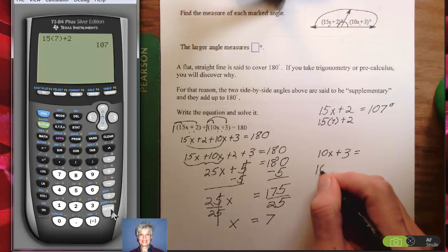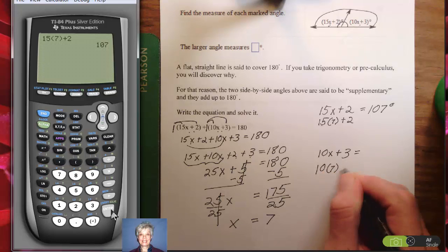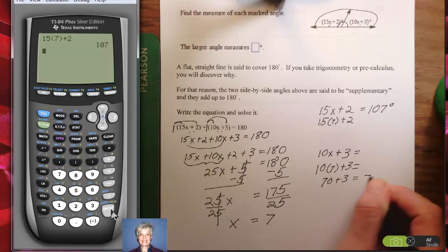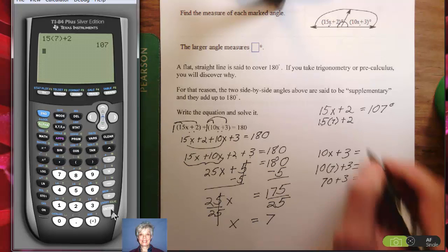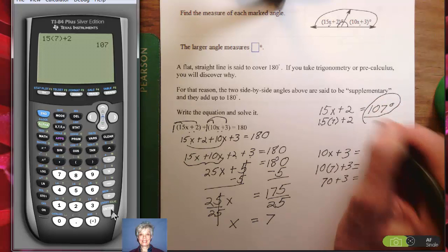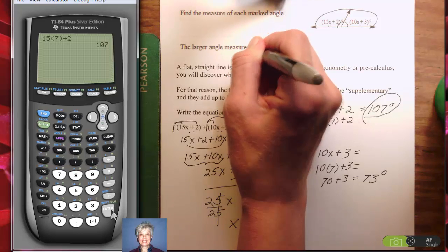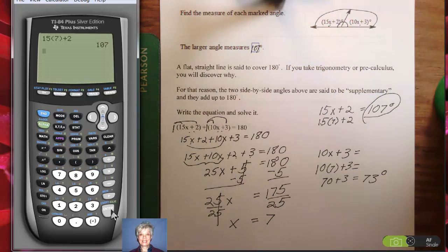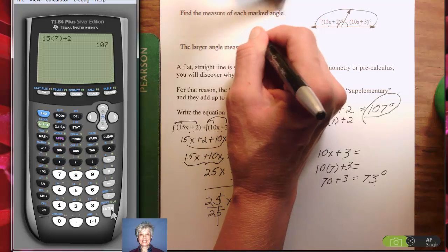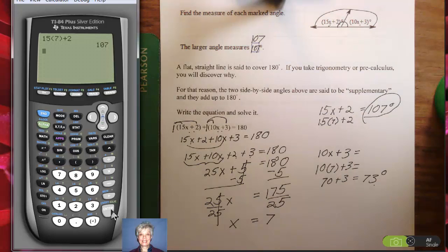And this, 10 times 7 plus 3, I can do this. 10 times 7 is 70, plus 3 is going to be 73 degrees. This is the larger angle, so 107 degrees. And if the MyMathLab problem were then to go on and ask you about the second angle, you could answer 73 degrees. And this is 107.